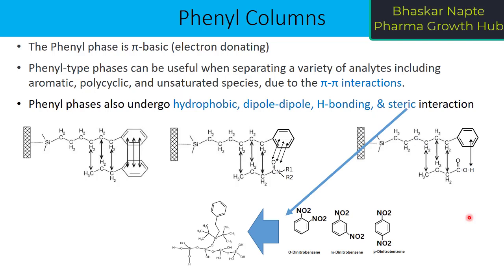The phenyl ring itself is a bulky ring and it creates steric hindrance. Positional isomers like ortho-dinitrobenzene, meta-dinitrobenzene, or para-dinitrobenzene may not have enough retention and separation on hydrophobic stationary phases like C8 or C18. But if you use the phenyl column, they may get separated because of this steric hindrance. So steric interaction is also possible in the phenyl column.